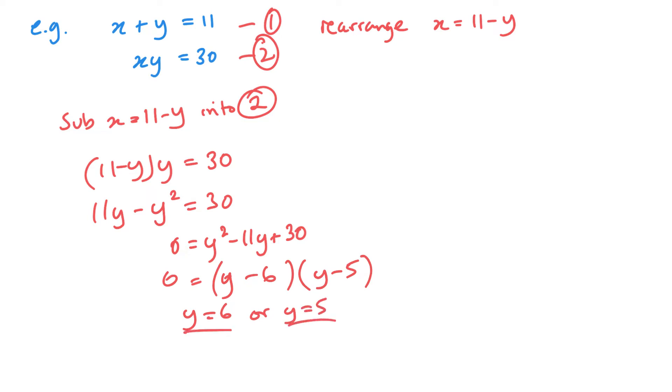So we've got two possible solutions. Now I'm going to substitute these back into the easiest equation, which 9 times out of 10 is the linear one. In this one, it's pretty much both the same. So I'm going to sub into equation 1. So we get x plus 6 equals 11 and x plus 5 equals 11. So x equals 5, x equals 6. So as a pair, I've got 5, 6 as one answer and 6, 5 as my other answer.